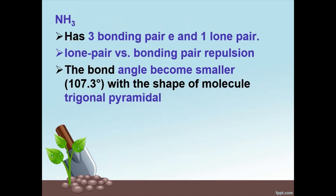For ammonia, NH3 has 3 bonding pairs of electrons and 1 lone pair. The repulsions present are lone pair versus bonding pair repulsion together with bonding pair versus bonding pair repulsion, but the strongest is lone pair versus bonding pair repulsion, making the bond angle smaller at 107.3 degrees, and the shape of the molecule is trigonal pyramidal.